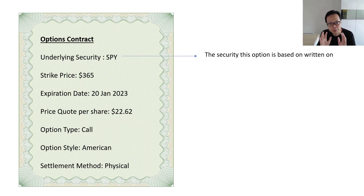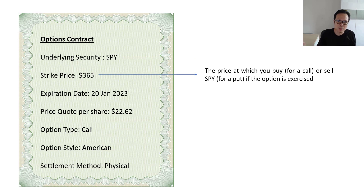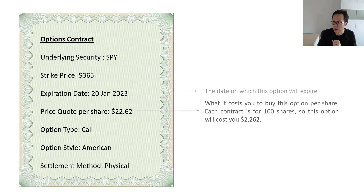Let's go through some important terms defined within an options contract. The first is the underlying — all options have an underlying from which the value is derived. In this example with an option on SPY, SPY is the S&P 500 exchange-traded fund. Next is the strike price — the agreed price at which you buy or sell when the option is exercised, depending on whether it is a call or a put. Then we have the expiration date — simply the date on which the option expires.